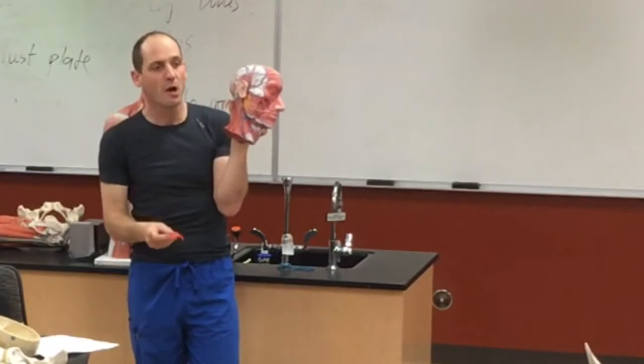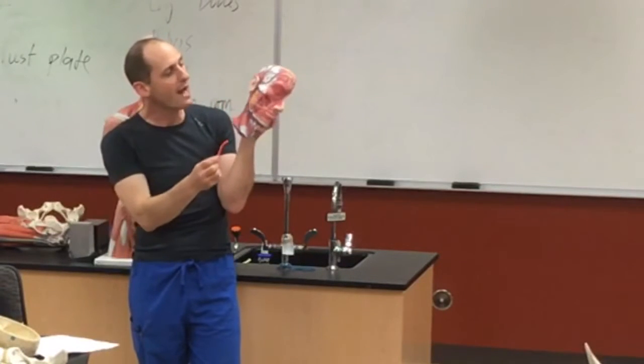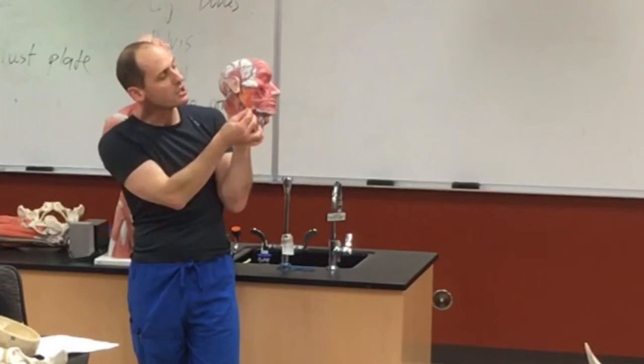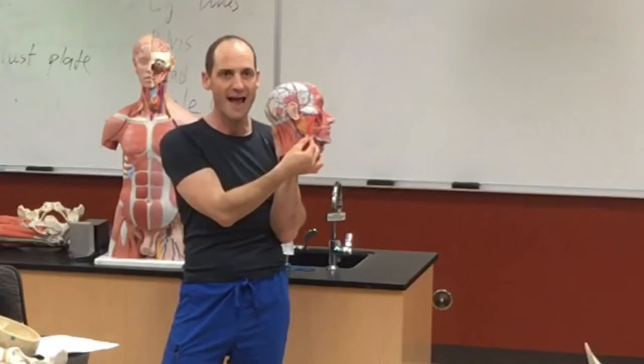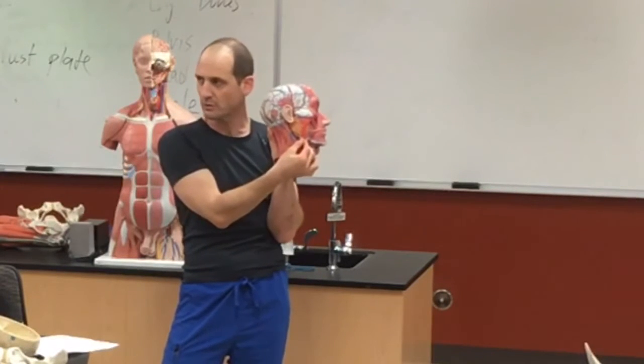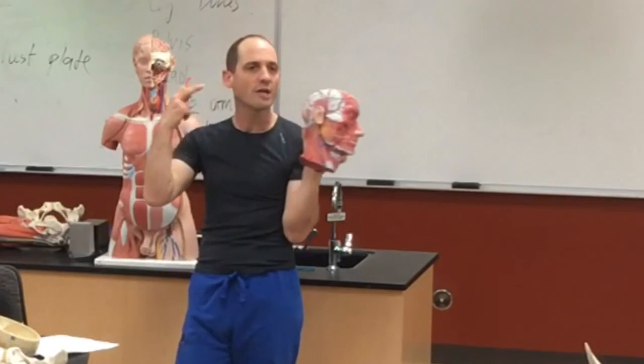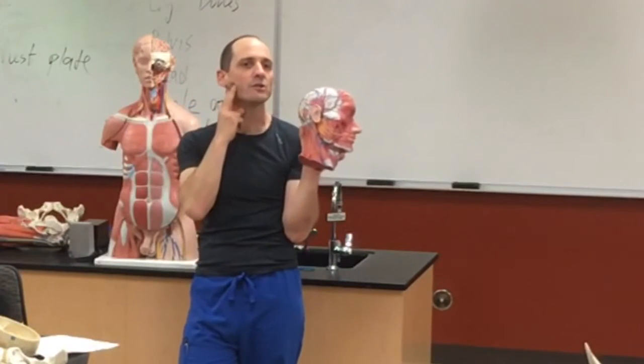The other chewing muscle is the one right there by the ramus of the mandible. That's the masseter. If you clench your teeth, it bulges out here on the side of the jaw. You get stronger.